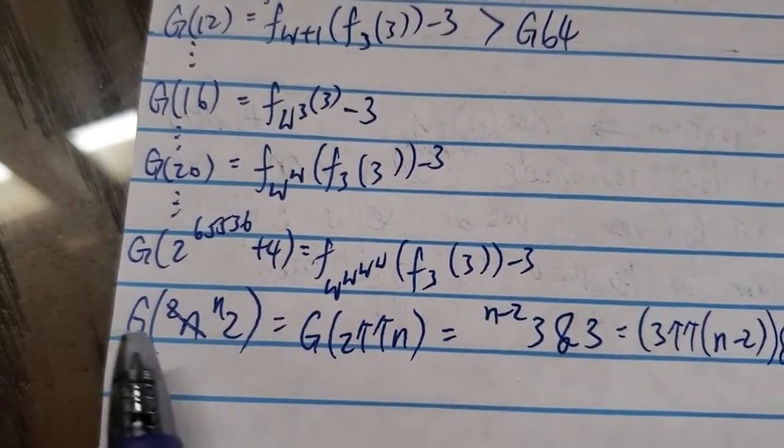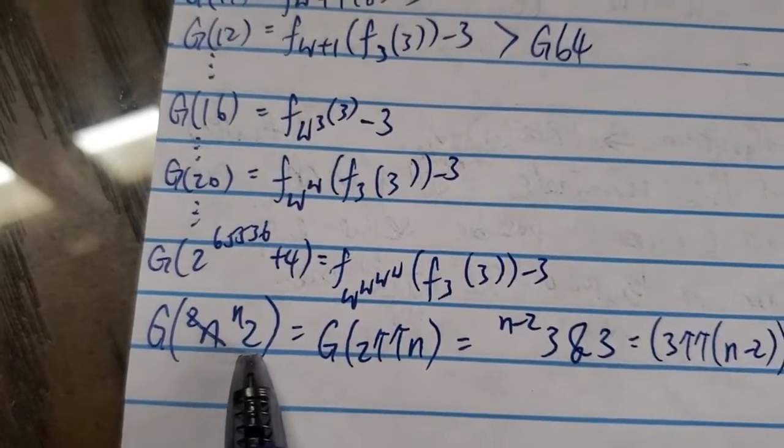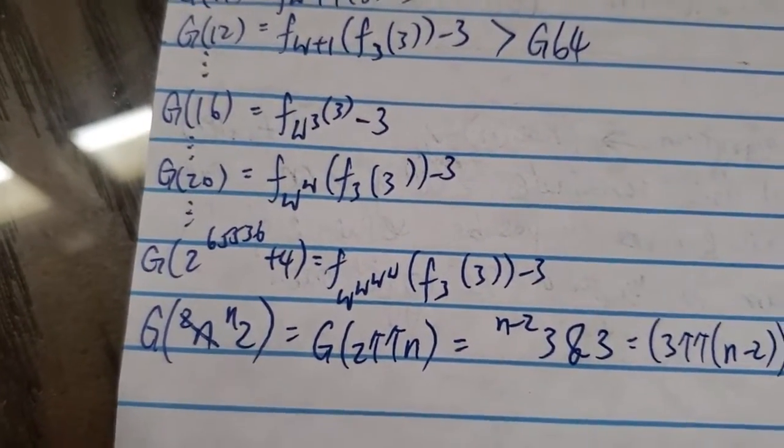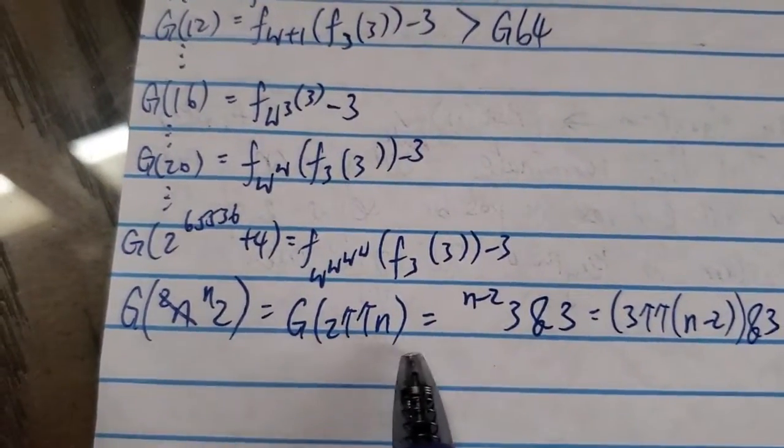It's, you know, if you plug in 2 double arrow n, and in this case, this is the double arrow or, you know, tetration. So this is equal to g of 2 double arrow n.